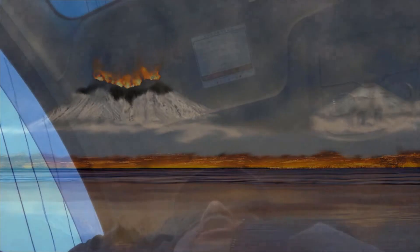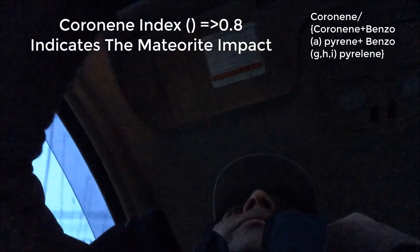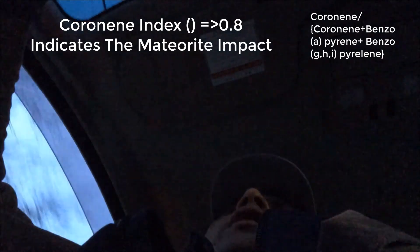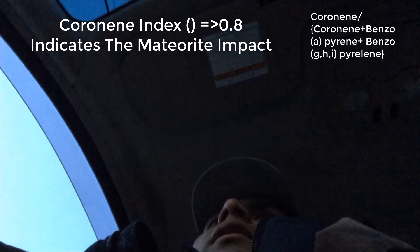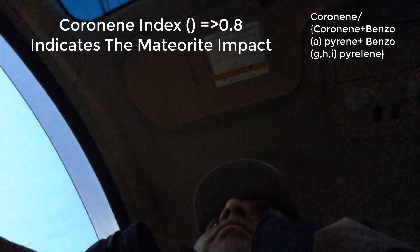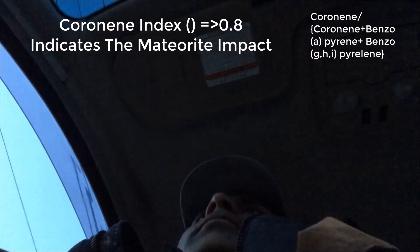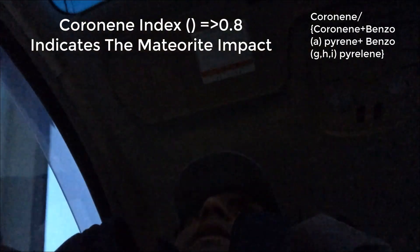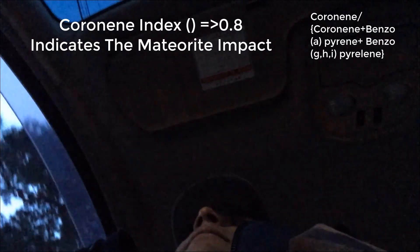The coronene index has specific threshold values. If the coronene index is greater than 0.8, it indicates a high-energy event such as meteorite impact. So under research, if we find the coronene index is greater than 0.8, we can interpret it as a meteorite impact, volcanic eruption, or forest fire, depending on the specific coronene index value.